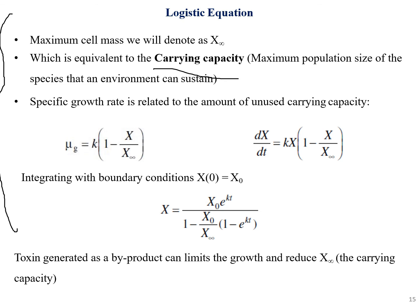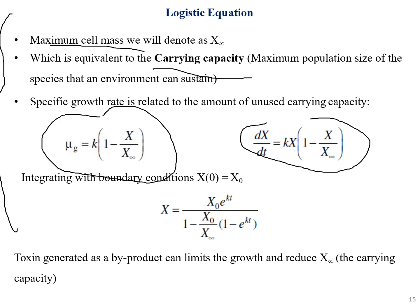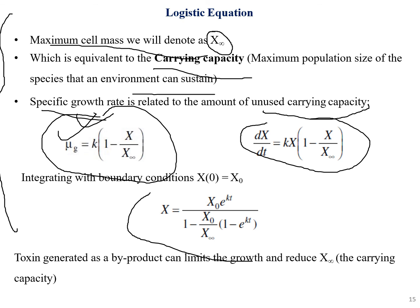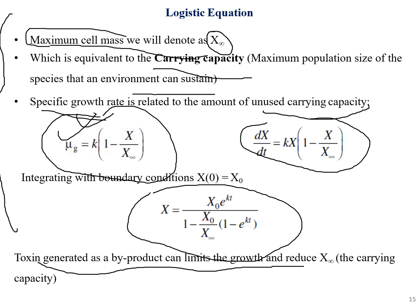We also have the concept of carrying capacity. The maximum cell mass is denoted X∞, equivalent to the carrying capacity — the maximum population size that an environment can sustain. The specific growth rate is related to the amount of unused carrying capacity. Toxins generated as by-products can limit growth and reduce X∞, effectively decreasing the carrying capacity.